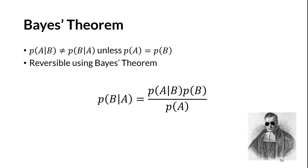Conditional probabilities aren't reversible. That is, P(A|B) doesn't equal P(B|A) unless the marginal probabilities are equal. In order to reverse the condition, it requires Bayes' theorem. There are a lot of uses for Bayes' theorem — this equation established an entire field called Bayesian statistics, which is only starting to gain traction in the hydrologic sciences.